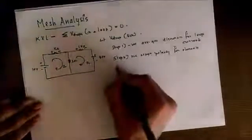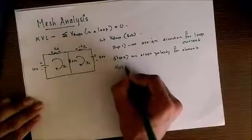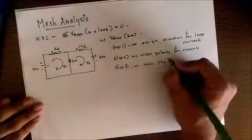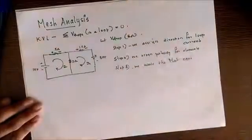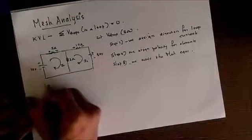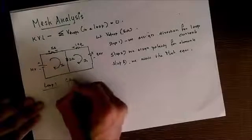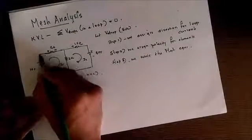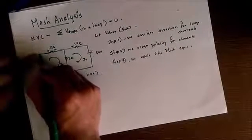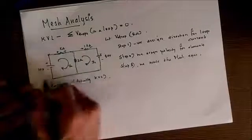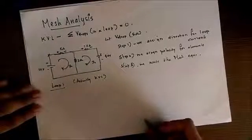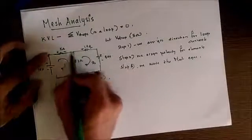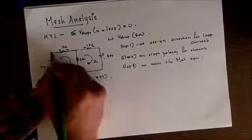Now step 3: we write the mesh equations. This is the final step. So we consider loop 1. Actually we're applying KVL in loop 1, so we start from a point in the loop and we have to end at that exact point. In my case, I take this point in loop 1 and this point in loop 2 and complete it like this.